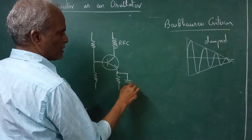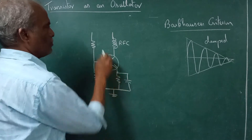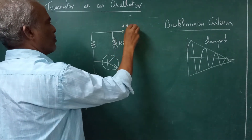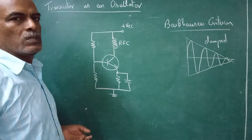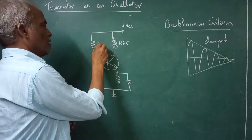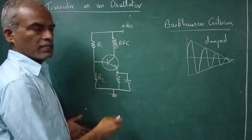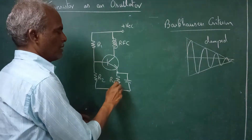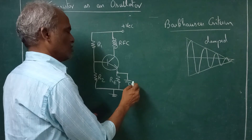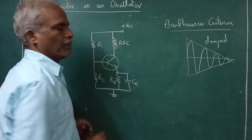This is a bypass capacitor and this is connected to plus VCC — usually 12 volts or 6 volts. This is our biasing resistor — this is voltage divider biasing. Here we have RE, the emitter resistance, and this is usually called the emitter bypass capacitor.